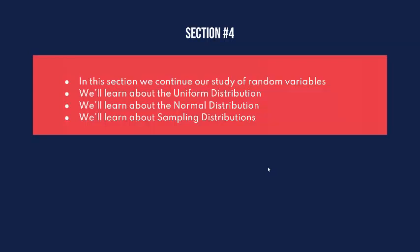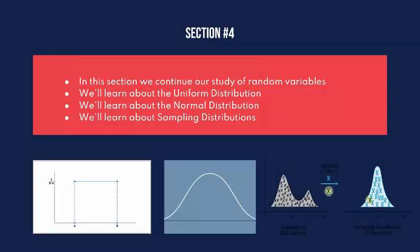Our fourth section of the course. In this section, we're going to continue our study of random variables. We're going to learn about continuous random variables here, and we're going to learn a lot about different statistical distributions. We're going to learn first about the uniform distribution, we'll learn a little about the exponential distribution, and then we're going to spend a bulk of our time learning about something called the normal distribution, or you might have heard this referred to as the bell curve.